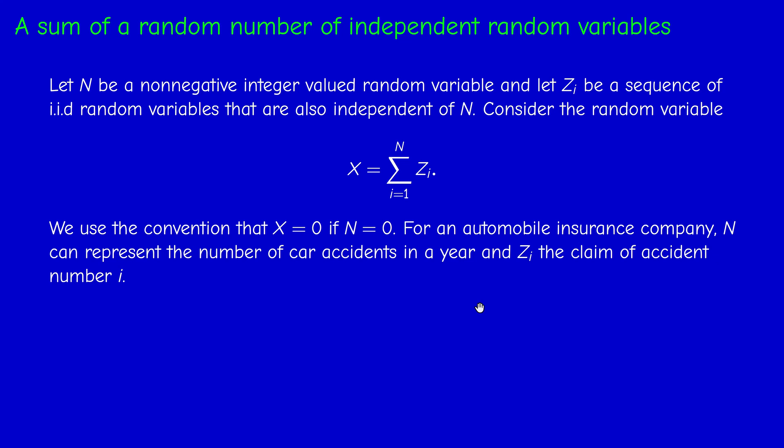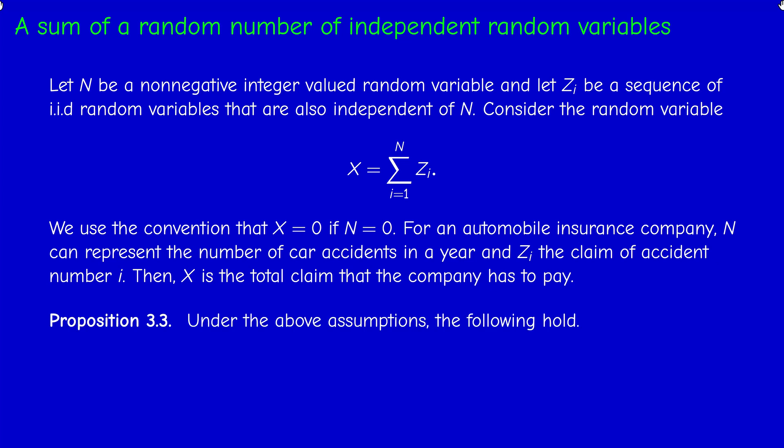This is important for actuarial science because an insurance company may use such random variables to model the total claim it has to pay. For example, if N represents the number of car accidents in a year and Z_i represents the claim of accident number i — assuming claims are independent — then X, the total sum of claims, is the total amount the company has to pay overall. Estimating this random variable is very important for the insurance company.